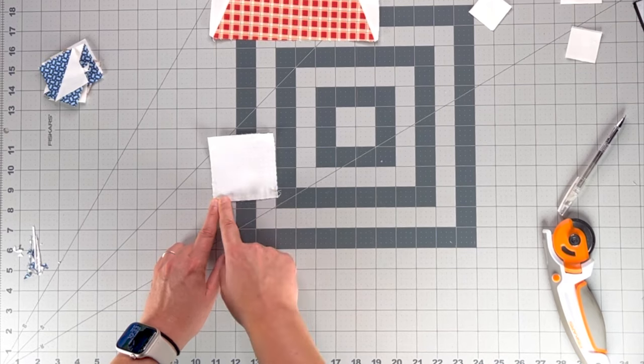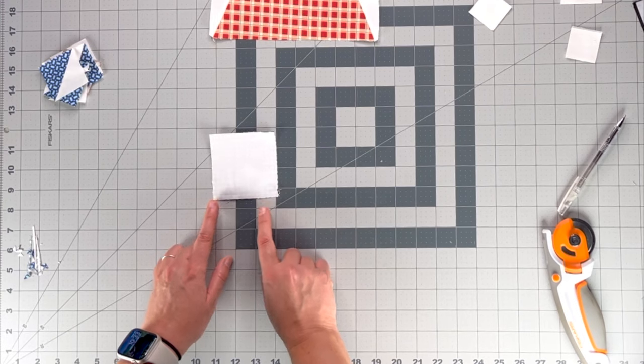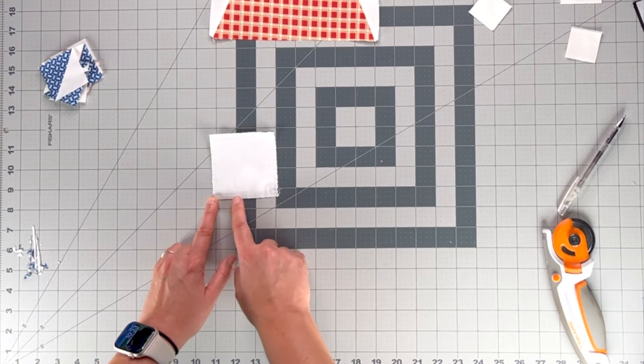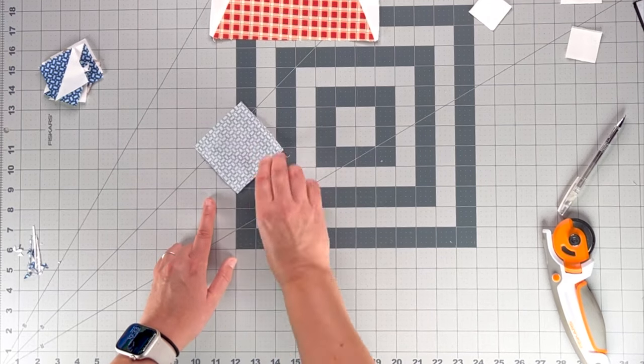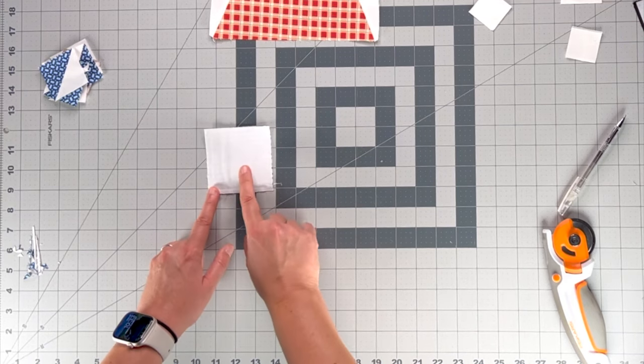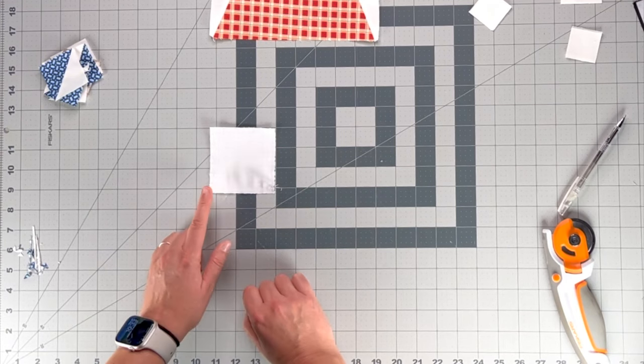So we take our square, which the dimensions of this are in the pattern, and we sew a quarter of an inch all the way around the square. There are two pieces of fabric, background fabric, and then whatever we would like the points of the friendship star to be.